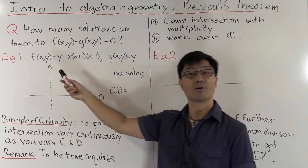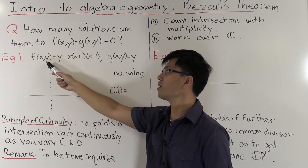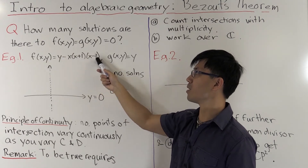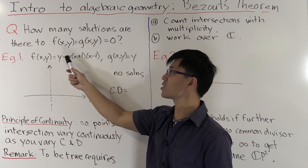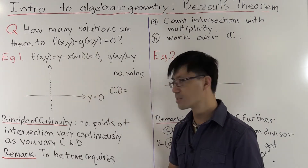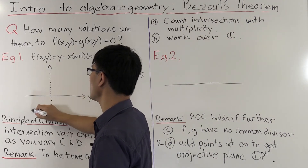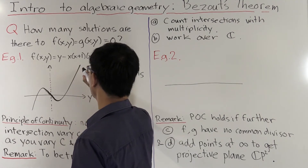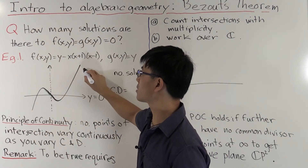Let's pick a simple example. The first polynomial we look at will be Y minus X times (X+1) times (X−1). When is this equal to zero? That's just the graph of Y equals this cubic, which has zeros at −1, 0, and 1. That defines a cubic curve — let's call it C.